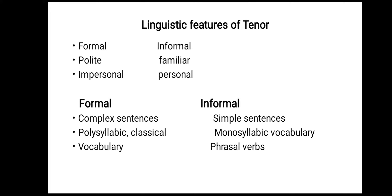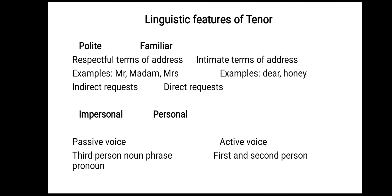The linguistic features of Tenor are: formal, informal, polite, familiar, impersonal, and personal. In the formal register, complex sentences and polysyllabic classical vocabulary structures are used. In informal, simple sentences, monosyllabic vocabulary, and phrasal verbs are used. For polite speech, respectful terms of address are used — for example, Mr. or Madam — and indirect requests are typical. In familiar speech, intimate terms of address such as 'dear' or 'honey' are used, and direct requests are typical.